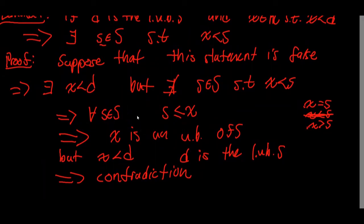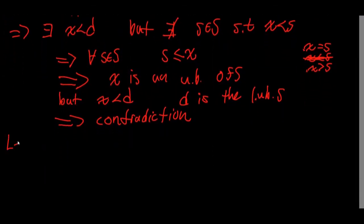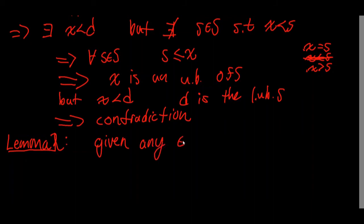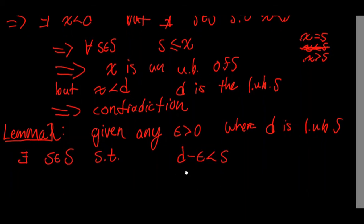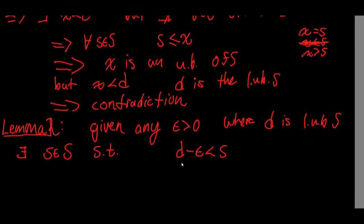We've proven Lemma 1. Now Lemma 2: Given any ε > 0, where d is the least upper bound of a set S, there exists an s in S such that d − ε < s. So given any ε > 0, I'll always be able to find an element s in S that is strictly greater than d − ε.